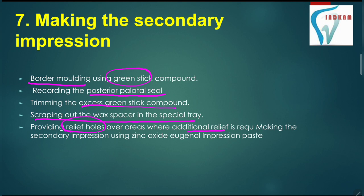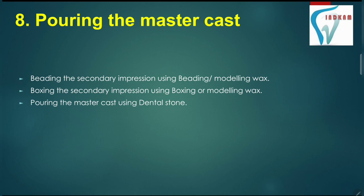The secondary impression is made using zinc oxide eugenol impression paste. After the secondary impression is made, we will be doing pouring of the master cast. The secondary master cast is poured by doing the beading of the secondary cast, done using beading wax or modeling wax. After beading, boxing is done of the secondary impression using boxing or modeling wax, and then the cast is poured to make the master cast.